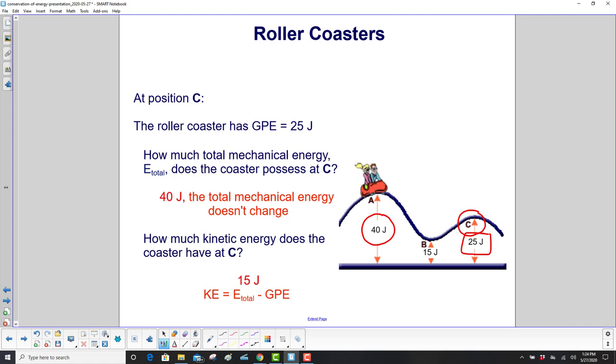How much kinetic energy do we have? Well, that's going to be the total energy minus the gravitational potential energy. So it's 40, that's the total minus 25, and we get 15 joules of kinetic energy.